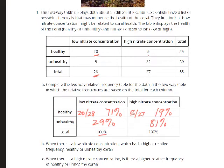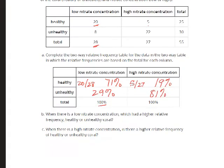I'm going to slide it down and we're going to look at some questions. This question says: when there is a low nitrate concentration — this column — which had a higher relative frequency, healthy or unhealthy coral? The answer is healthy because that's 71%, where unhealthy was only 29%. In question C, it's talking about high nitrate concentration. The answer is unhealthy coral because that's 81%.